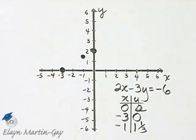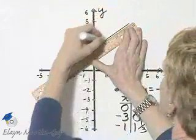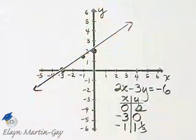You see these all three lie on the same line, and the line through the three points is the graph of 2x minus 3y equals -6.